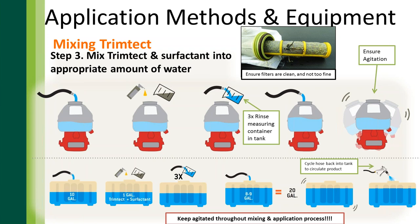Going back to the mixing procedure: fill the container halfway, mix in your TrimTech and non-ionic surfactant, shake, and then triple rinse your measuring container back into the reservoir. TrimTech is a very thick product that adheres to the sides of your mixing container, so triple rinsing ensures you get all of it into the reservoir. Then top off the container to your total desired amount of solution, and agitate.